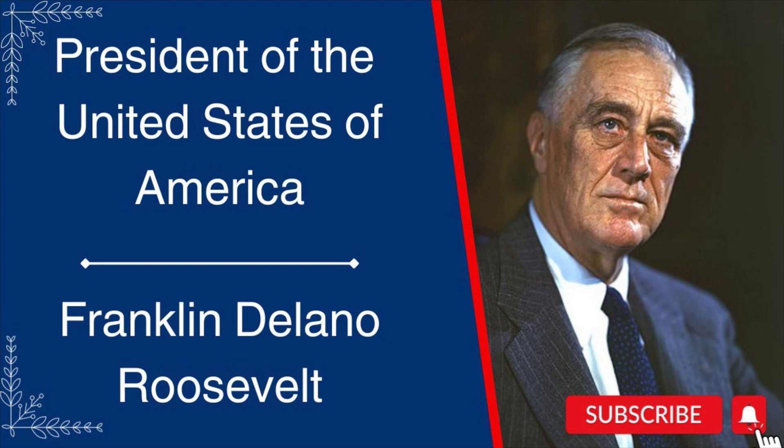Roosevelt was James M. Cox's running mate on the Democratic Party's ticket in the 1920 U.S. presidential election, but Cox lost to Republican nominee Warren G. Harding. In 1921, Roosevelt contracted a paralytic illness that permanently paralysed his legs.